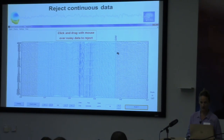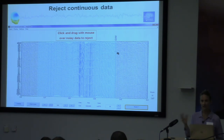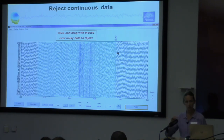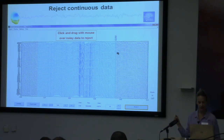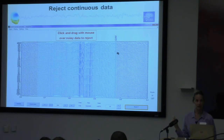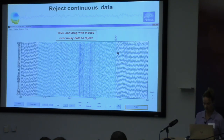Same as before, when you're done you can keep scrolling and select more parts of the data you want to get rid of. Then at the end, if you want to reject those data bits permanently, you press Reject.